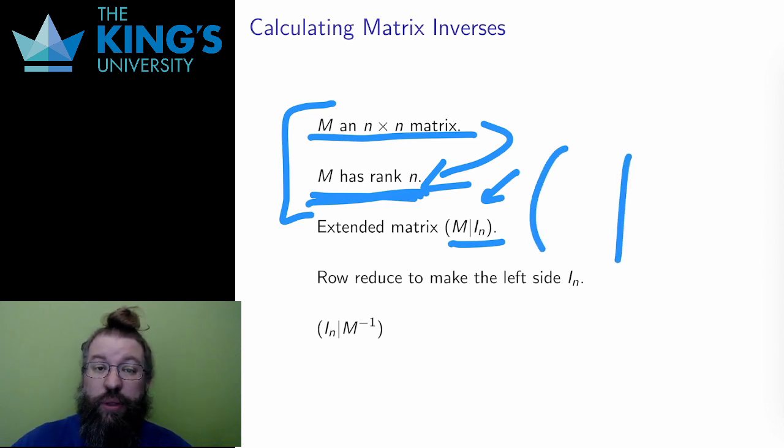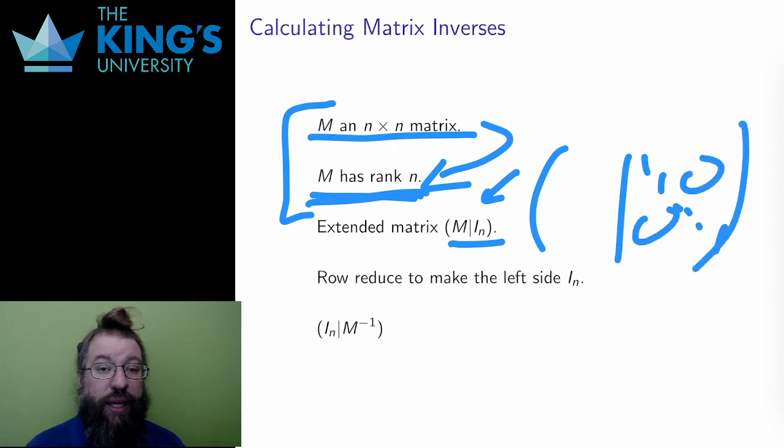The left side will become the identity in row reduction. It has to become the identity because of the maximum rank condition. The only way to fit in all of those leading ones is just to end up with the identity.